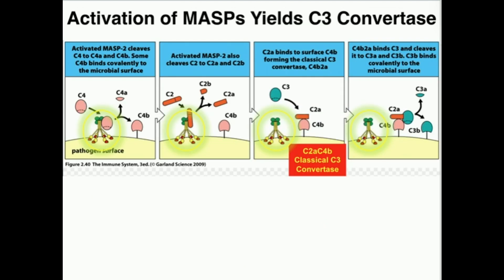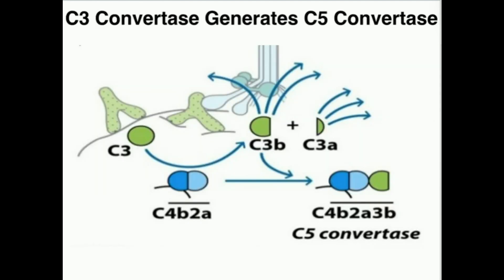C4B and C2B together form C3 convertase, just as we saw in the classical pathway. C3 convertase activity means it takes C3 and splits it into C3A, which floats away, and C3B, which remains bound and binds to the membrane of the pathogen. Once we have C4B, C2B, and C3B bound together, these three proteins are no longer a C3 convertase — they are now a C5 convertase.